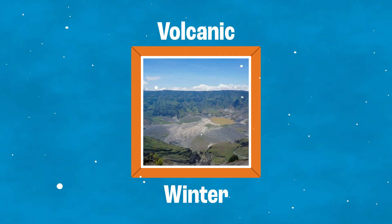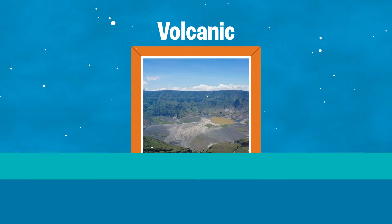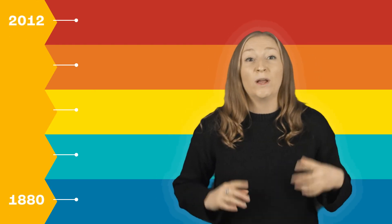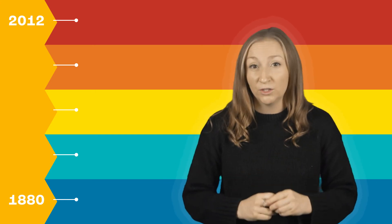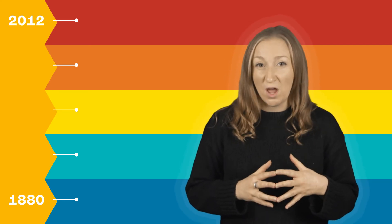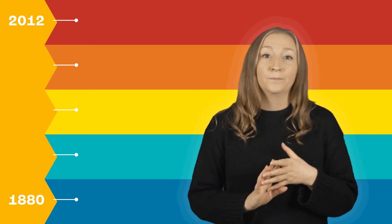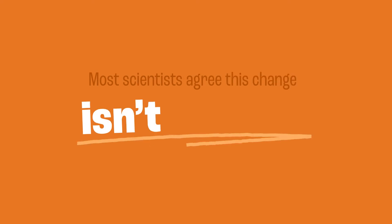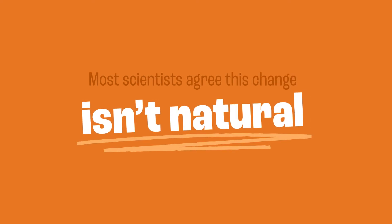However, in recent years, there has been a consistent period of global warming of the like we have never seen before. In fact, between 1880 and 2012, average global temperatures went up by 0.85 degrees Celsius. It doesn't sound like much, but every little change to the natural temperature of the Earth can have a huge impact. Most scientists agree this change isn't natural, and it's being caused by humans.